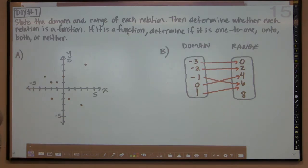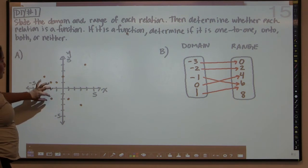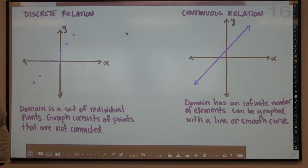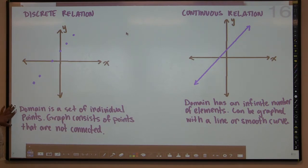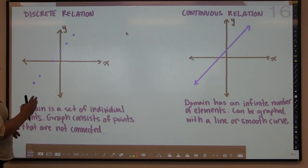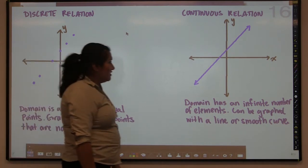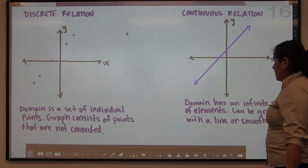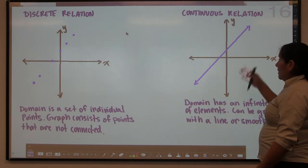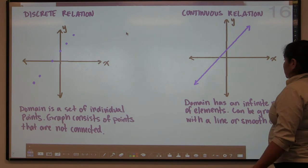Now you're going to try an example with ordered pairs. Then we'll talk about discrete relations versus continuous relations. A discrete relation is when the domain is a set of individual points — they're not connected, just scattered individual points. A continuous relation is where you have an infinite number of elements in the domain, and when graphed it's a full connected line or smooth curve. That's continuous versus discrete.